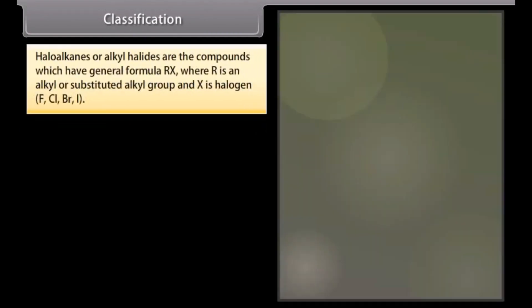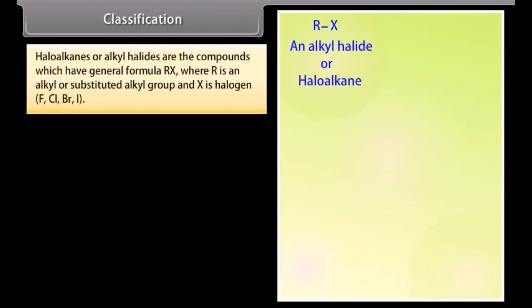Classification: Haloalkanes or alkyl halides are compounds which have the general formula RX, where R is an alkyl or substituted alkyl group and X is the halogen — F, Cl, Br, or I.